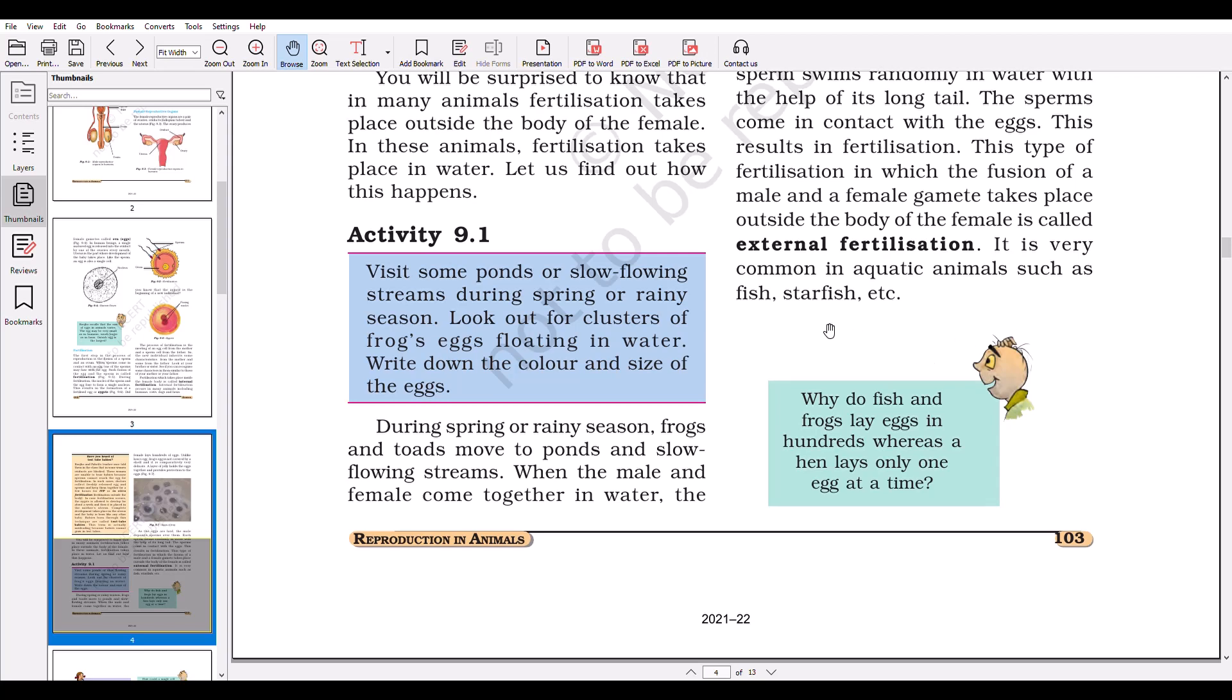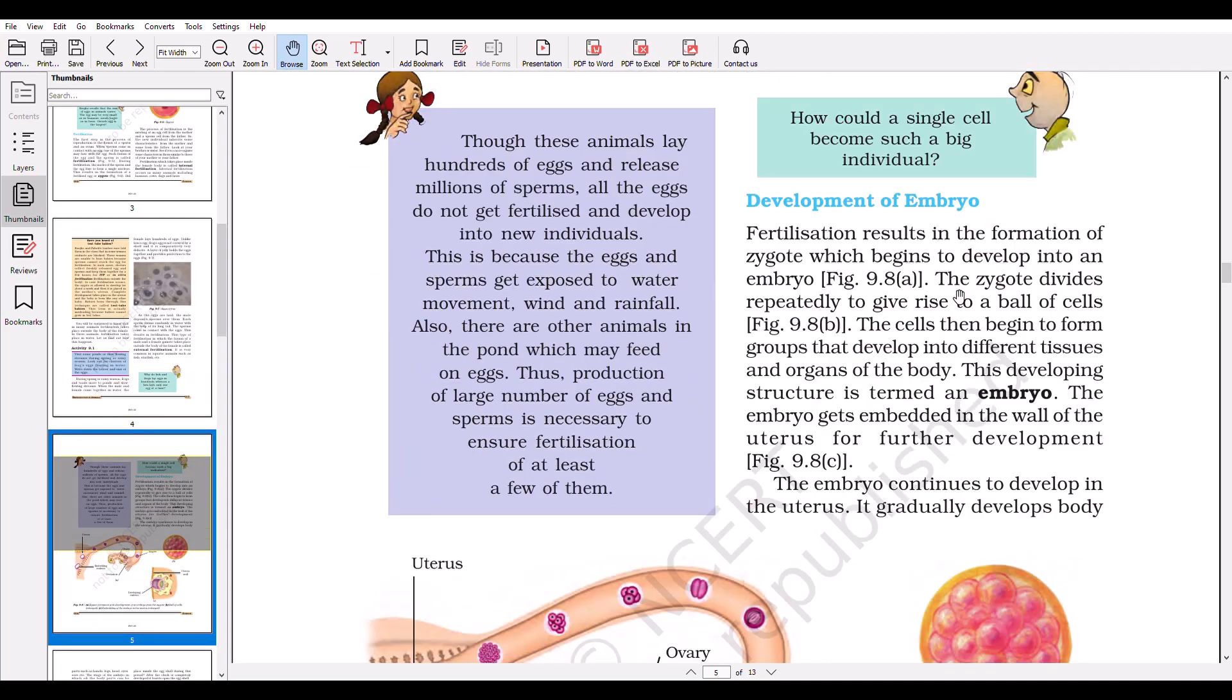Fish and starfish come into this category. In them, external fertilization occurs. Though these animals lay hundreds of eggs and release millions of sperms, all the eggs do not get fertilized and develop into new individuals. This is because the eggs and sperms get exposed to water movement, wind, and rainfall. Also, there are some other animals in the pond which may feed on eggs. Thus, production of large numbers of eggs and sperms is necessary to ensure fertilization of at least a few of them.